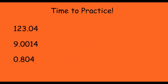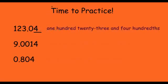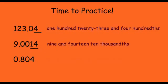In this next slide, we're going to do a little bit of practice. Do this in your notebook and see if you can figure these out before I tell you. For the first one, looking at the last digit — the four is in the hundredths place — so we have one hundred twenty-three and four hundredths. For the next one, we say "and" for the decimal point, so we have nine and fourteen ten-thousandths, because that four is in the ten-thousandths place. For the last one, we have eight hundred and four thousandths — we don't need to say the zero. We would just say eight hundred and four thousandths.